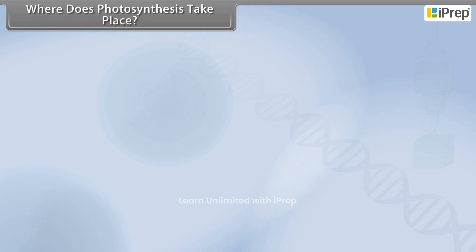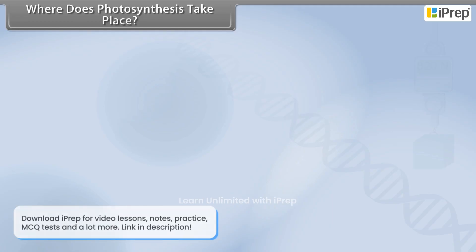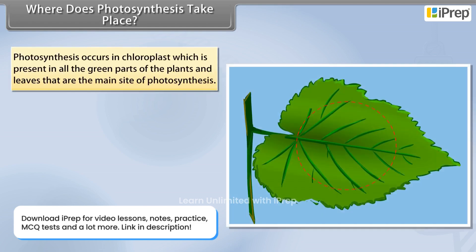Where does photosynthesis take place? Photosynthesis occurs in the chloroplast, which is present in all the green parts of the plants. Leaves are the main site of photosynthesis.